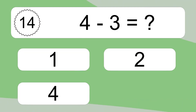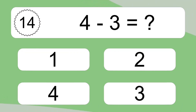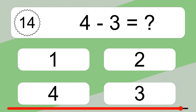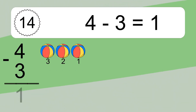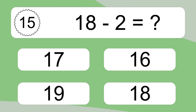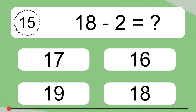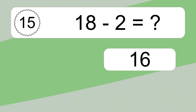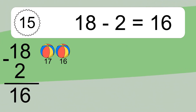4 minus 3 equals what? 4 minus 3 equals 1. Let's count it: 3, 2, 1. 18 minus 2 equals what? 18 minus 2 equals 16. Let's count it: 17, 16.